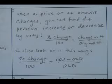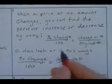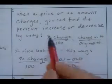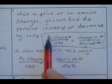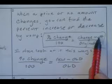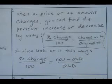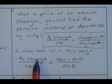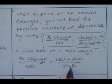When a price or an amount changes, you can find the percent increase or decrease using this. The textbook gives you this in section 7-6. It says percent change over 100 equals the change in the number over the original number. I like to look at it this way: percent change over 100 equals the new number minus the old over the old.